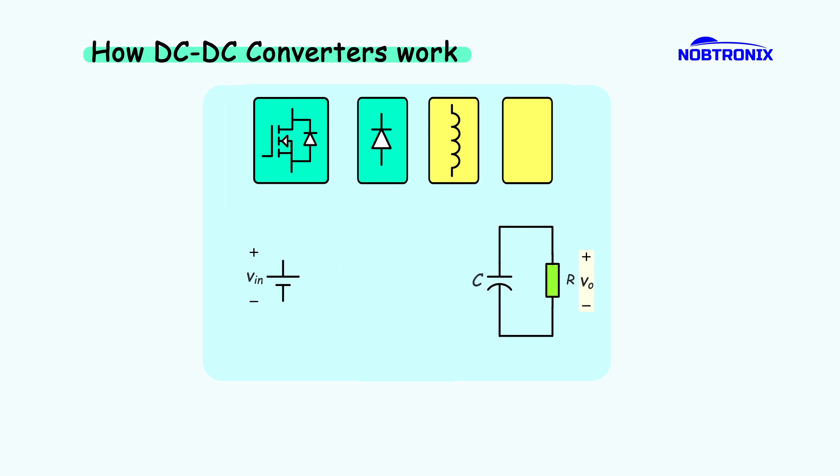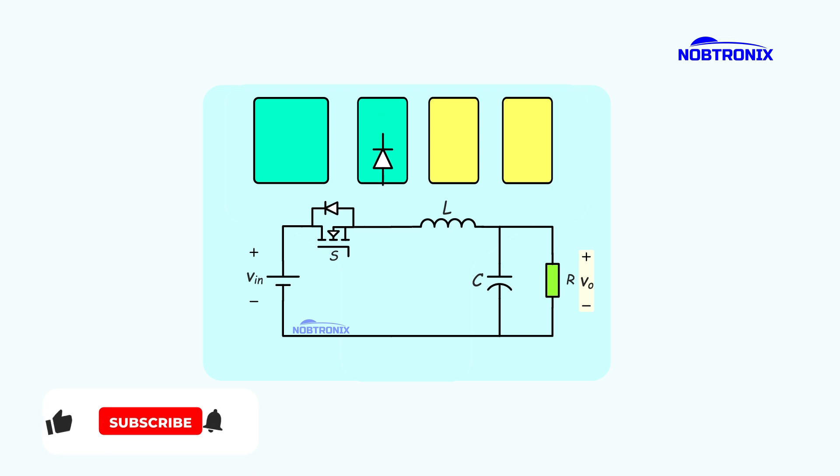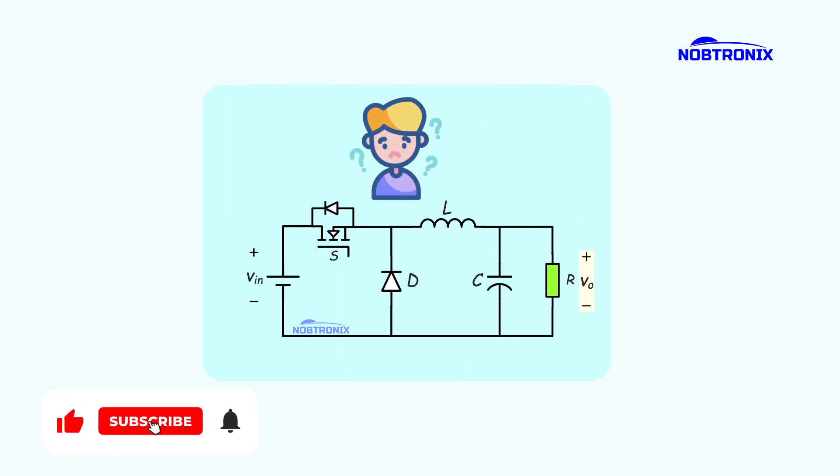Now with the remaining components, we'll put the MOSFET at the input to control the connection to the source. The inductor goes between the MOSFET and the capacitor, and we'll add the diode to give the inductor a path when the switch is off.